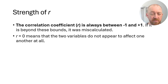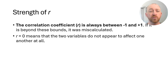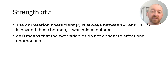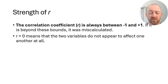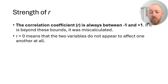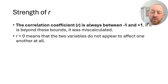Right in the middle of negative 1 and positive 1 is of course the value 0. If you have a correlation of 0, that means they do not appear to be related whatsoever. As one variable does whatever it does, we have no way of predicting what the other variable will do. That is a zero correlation — no correlation whatsoever.